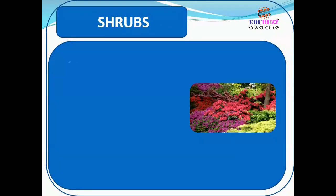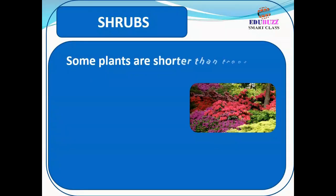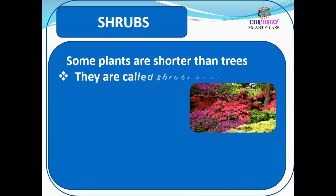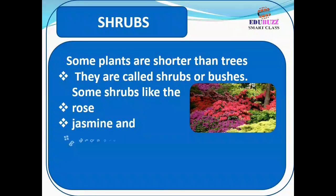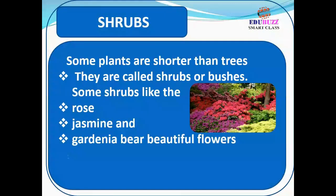Some plants are shorter than trees. They are called shrubs or bushes. Some shrubs, like the rose, jasmine, and gardenia, bear beautiful flowers. Some shrubs also have thorns.